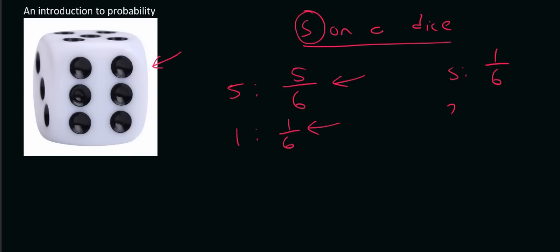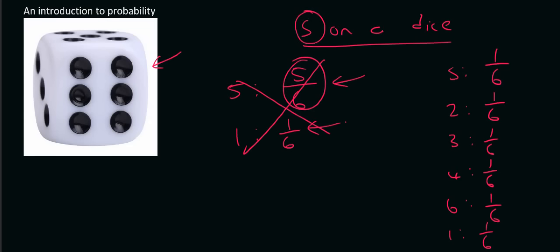Your chances of rolling a two is also only one out of six — same for a three, a four, a six, and a one. We can't say that the chances of rolling a five is five out of six. That is not correct, so just watch out for that.